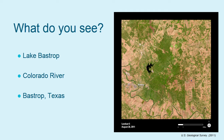Did you identify a body of water? A river? Or maybe the town of Bastrop since it is labeled? What about the word Lukey? Did you see it? According to a NASA blogger, a landowner cleared forests leaving some trees to spell his family name. The Lukey Landscaping can be used to evaluate spatial resolution of photographs taken by astronauts from space.